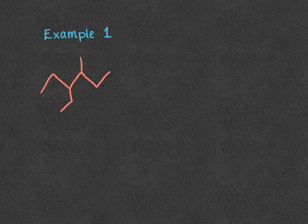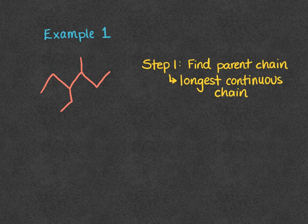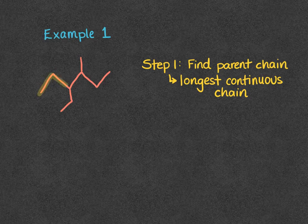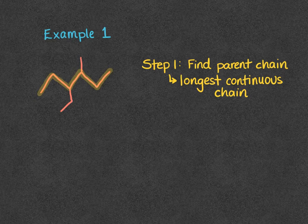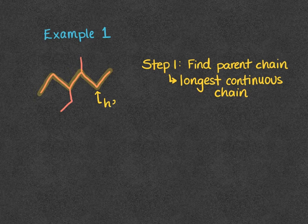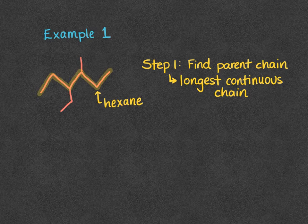For this example, our first step is going to be to find the parent chain, and that's going to be our longest continuous chain. I'm going to highlight our parent chain here in yellow. That's a six carbon chain — it's the longest from start to finish without retracing or lifting my pencil. So that six carbon chain is going to be called hexane. My parent chain is hexane.